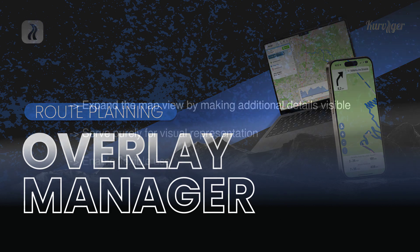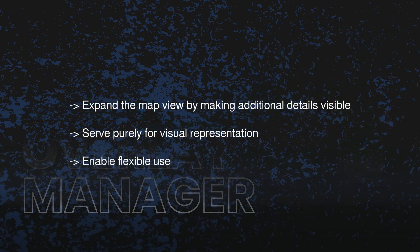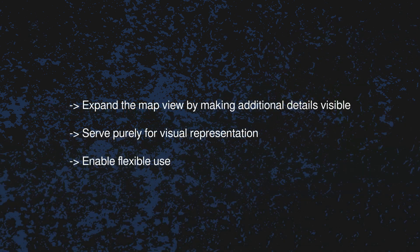A map overlay in Curviger is a visual representation of additional information layered over the existing map. This can be waypoints, tracks, or complete routes. They allow you to customize the map to your needs and show exactly the information that's relevant to your route planning, giving you optimized and clear planning with all important data visible at a glance.